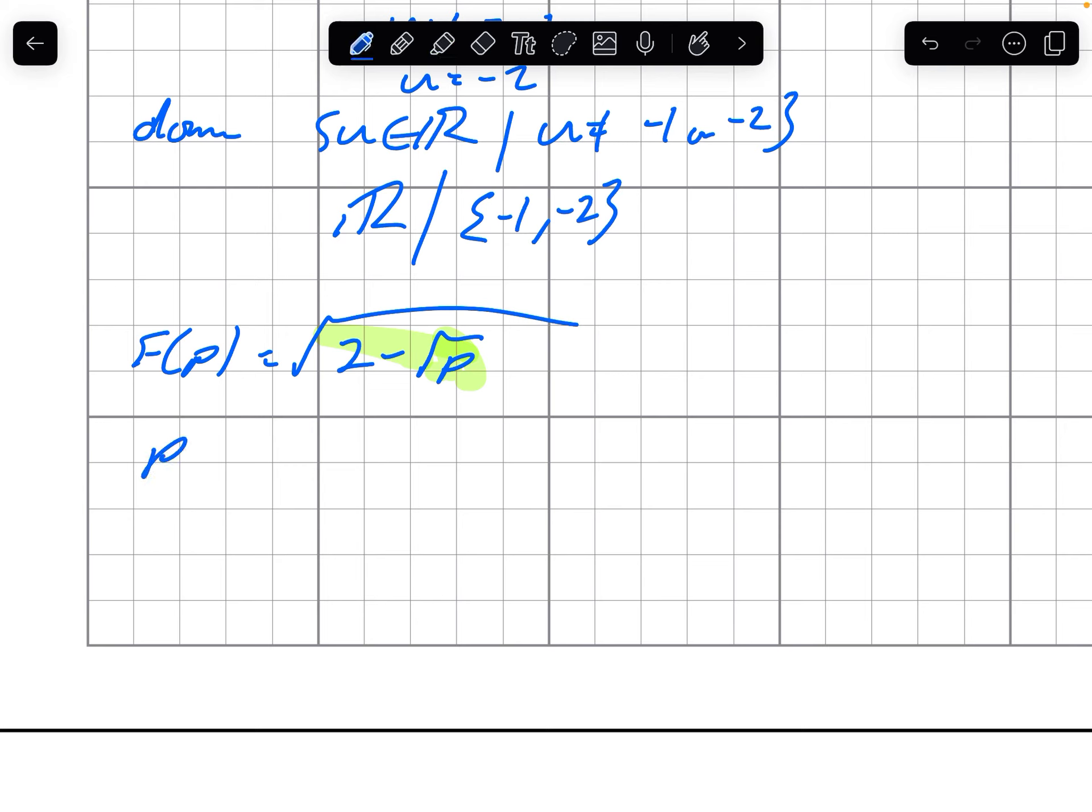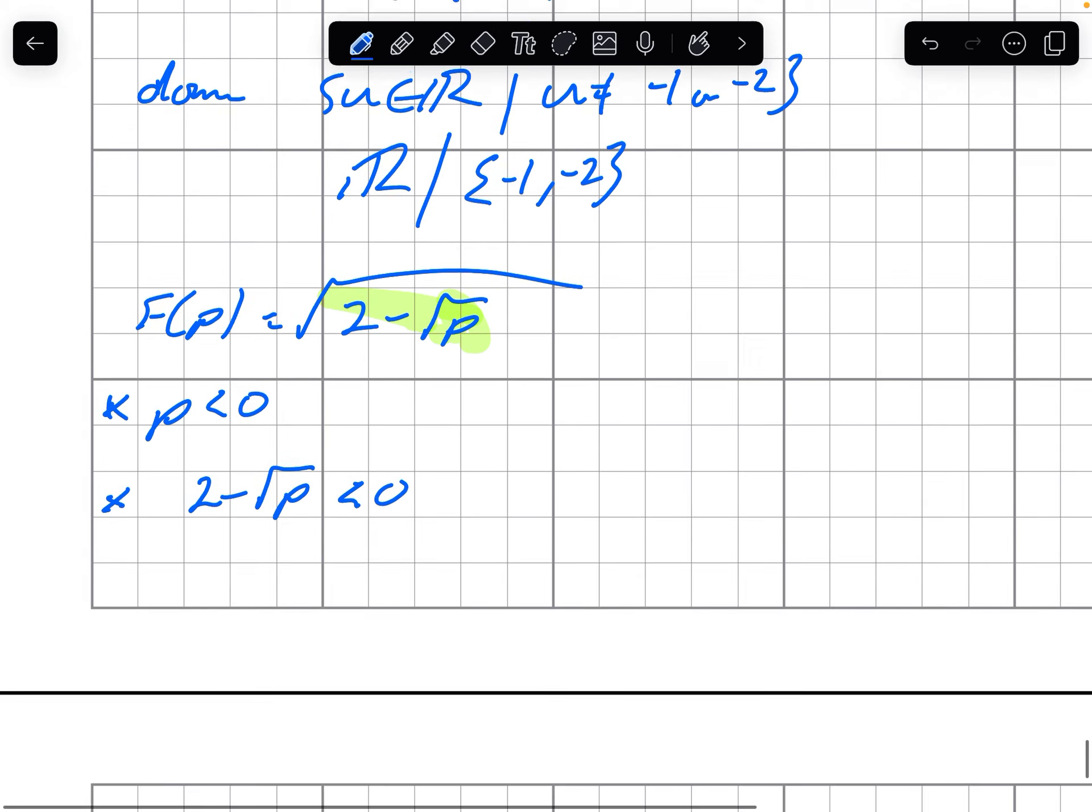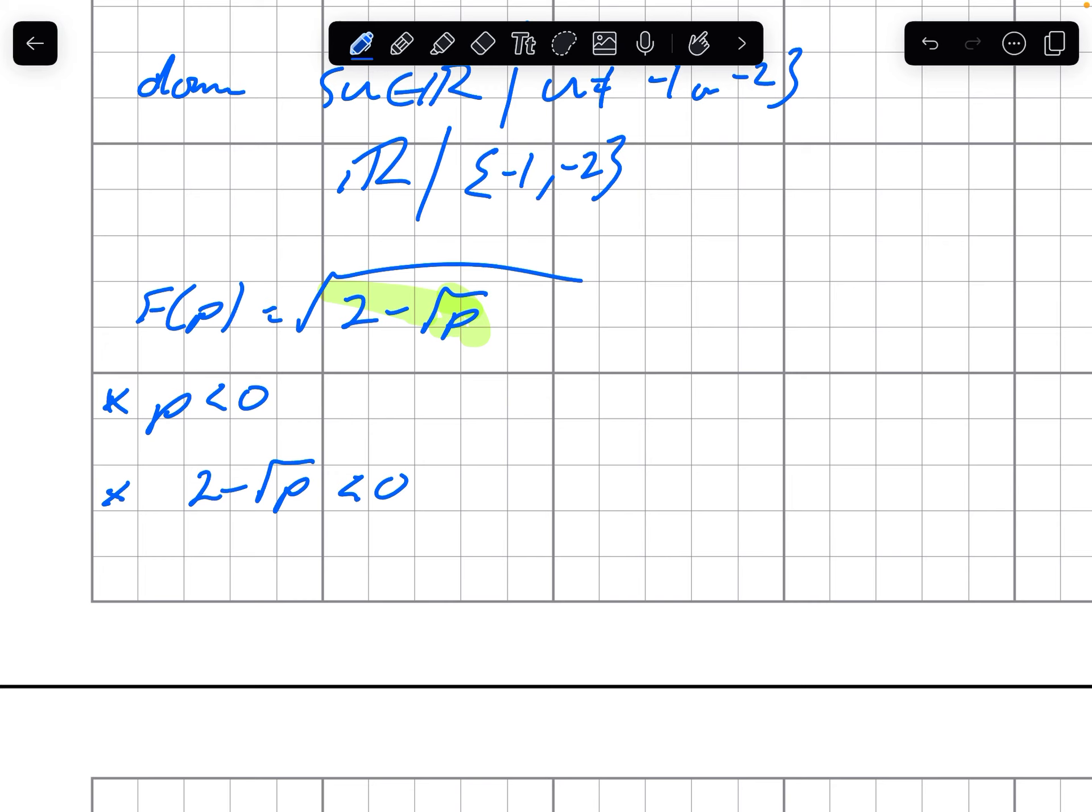So p less than 0, that's a problem. 2 minus root p is less than 0. Let's solve this one. 2 is less than root p or 4 is less than p.